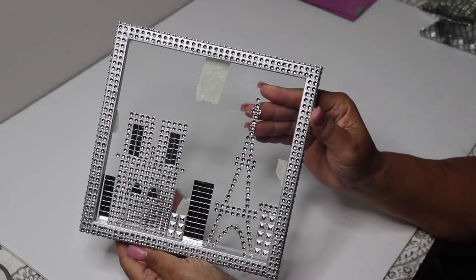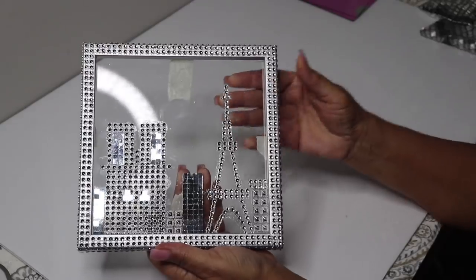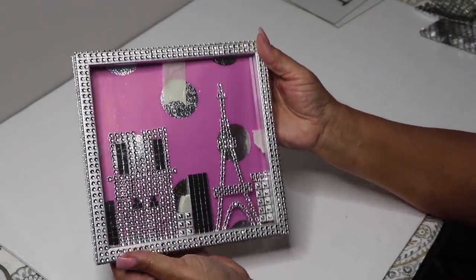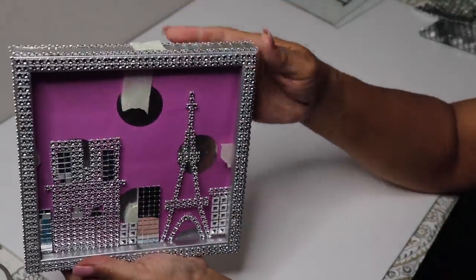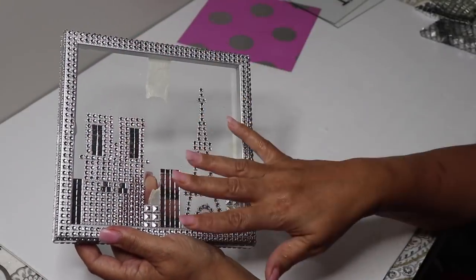I'm done with my Paris bling skyline and my daughter is going to absolutely love it. Now I will have to decide on the background for my skyline. Again, here's another chance to add a decorative paper in the background. Pink is our favorite color, so this will work out, but I'm going to use a mirror background instead.